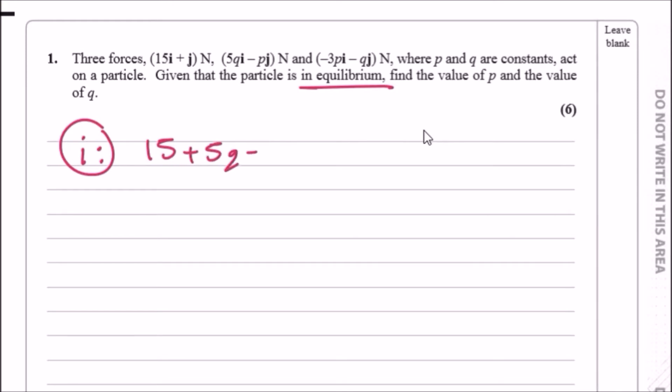And as for the j's, the first one is literally 1j, so 1 - p - q must result in 0. So these are the two equations. In fact, these are simultaneous equations.